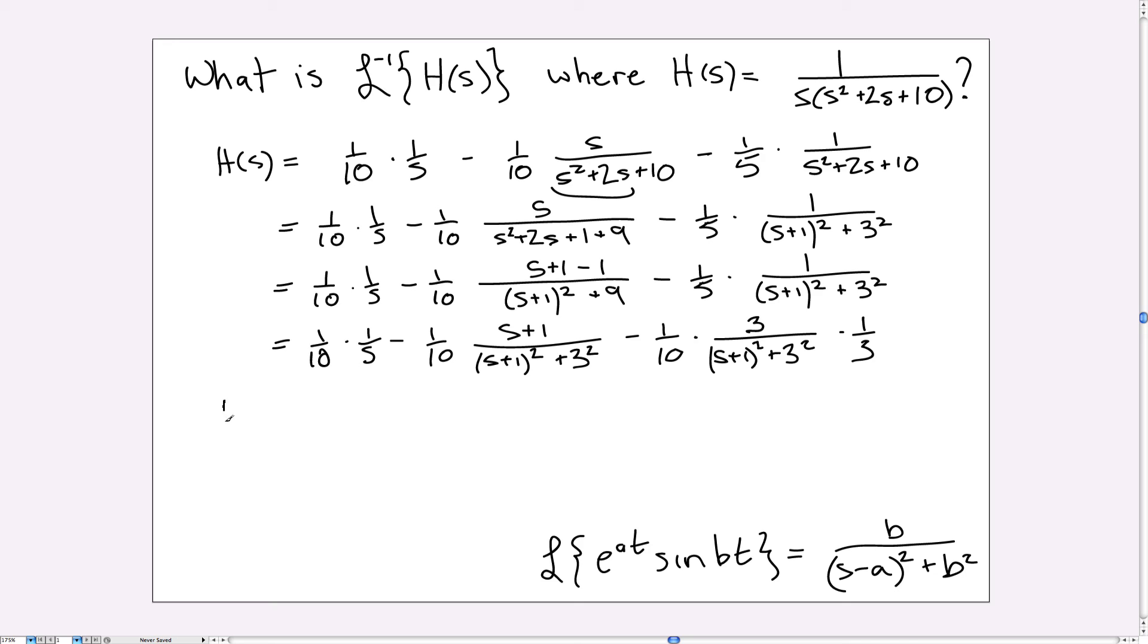So now I can take inverse transforms of all three terms, and I'll get H of t, which will be 1 over 10 times 1 over S. The inverse transform of that is just 1 over 10. Here my 1 over 10 stays out in front, and the inverse transform of this guy is e to the minus t, where the minus 1 comes from this shift here, multiplied by the cosine of 3t, because of the B squared here, that's the 3. And then I have a minus 1 over 30 times e to the minus t, as in the other term, multiplied by sine of 3t. And that is the correct H of t inverse transform of the function we started with at the top.